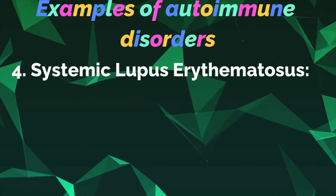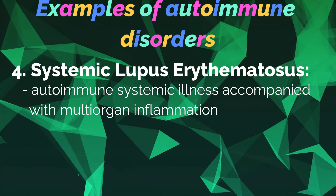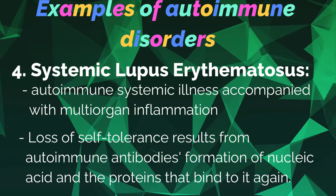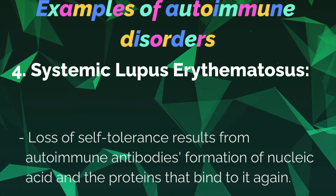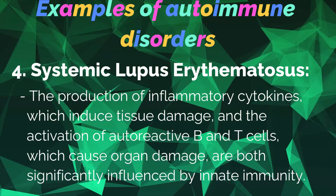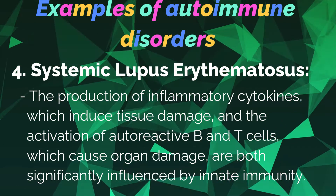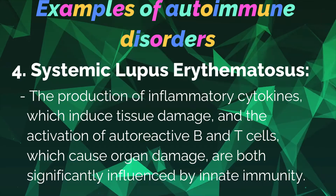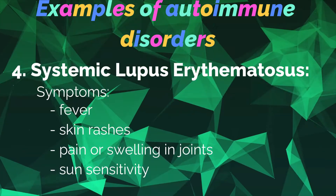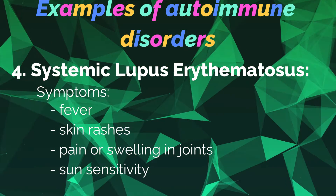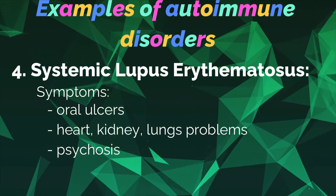Number four: Systemic lupus erythematosus. It is an autoimmune systemic illness accompanied by multi-organ inflammation. Loss of cell tolerance results from autoimmune antibody formation against nucleic acid and the proteins that bind to it. The production of inflammatory cytokines which induce tissue damage, and the activation of autoreactive T cells which cause organ damage, are both significantly influenced by innate immunity. Symptoms include fever, skin rashes, pain or swelling in joints, sun sensitivity, oral ulcers, heart, kidney, and lung problems, and psychosis.